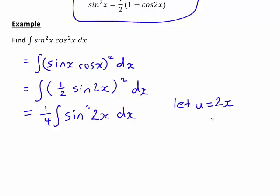So how will that work? Well, if u is 2x, then du dx is 2, so therefore du is 2 dx. But we just have 1 dx here. So rearranging that, dx is equal to du divided by 2, which is better written as a half du.